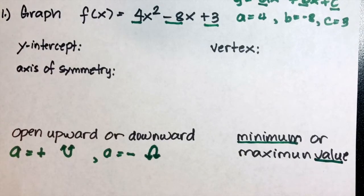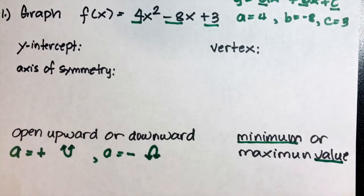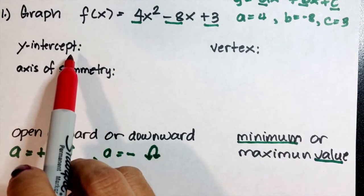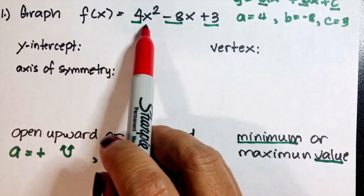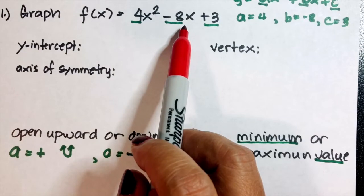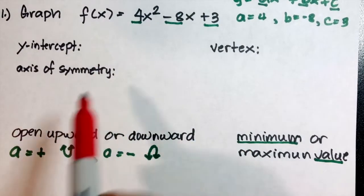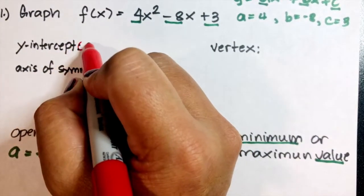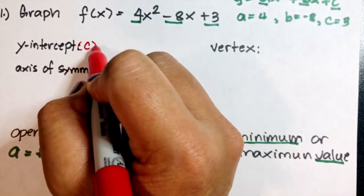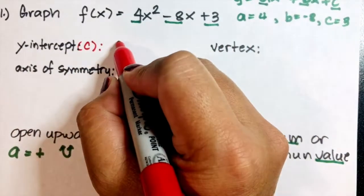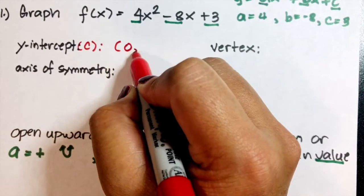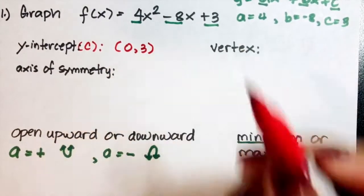Let us find the y-intercept. To find the y-intercept, we substitute 0 for x, or simply the y-intercept is the value of c. So what is c? That is 3, so our y-intercept is (0, 3).